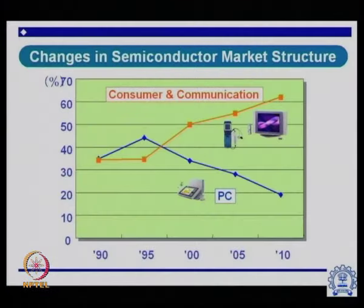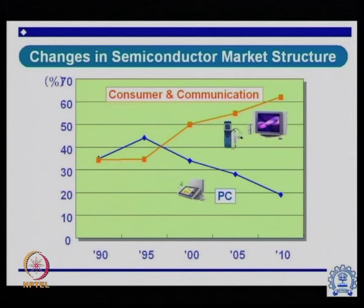Over the years, structural changes in the electronics industry have occurred from around 1960 through 2000. In the early 1990s, most effort was on PC development because consumers wanted more PCs. Up to about 1995, a huge percentage of effort and money was invested in the PC area.